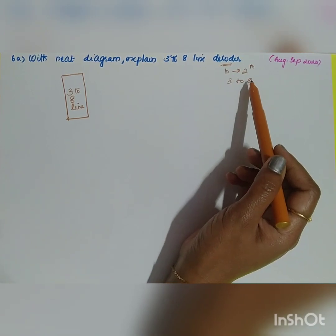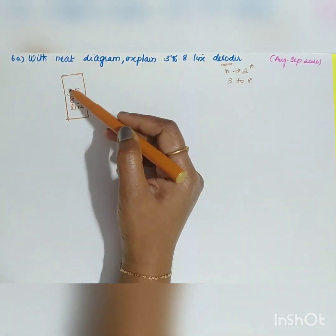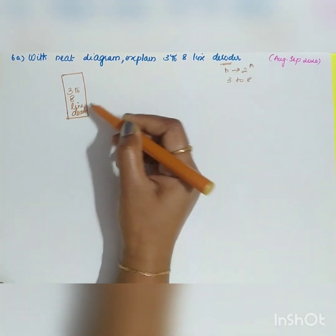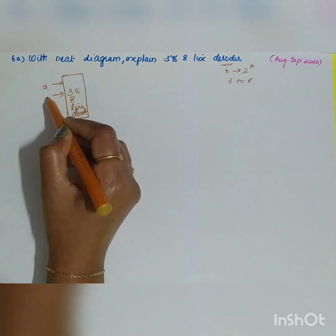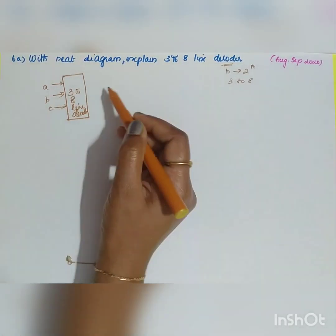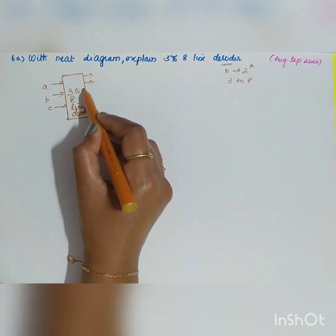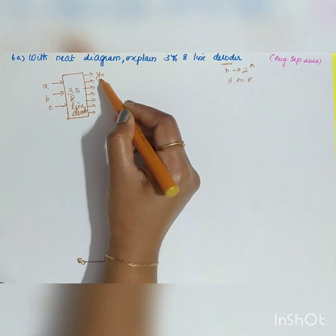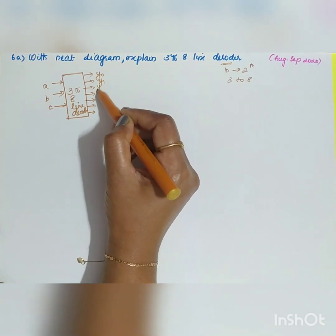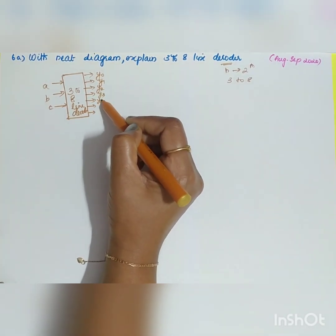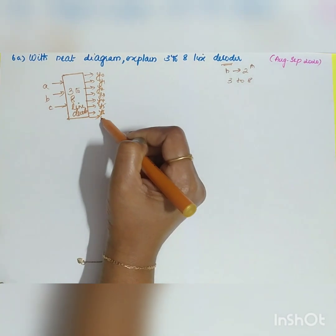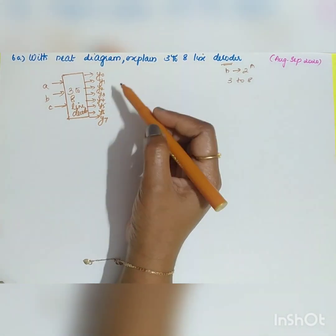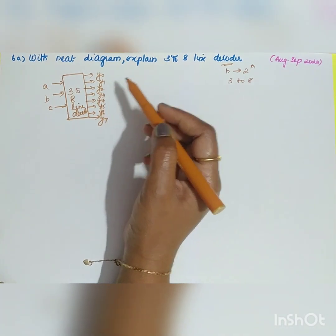Let us draw the diagram of a 3-to-8 line decoder. The decoder has three inputs: A, B, and C, and it converts them into outputs 0 to 7. The outputs are Y0, Y1, Y2, Y3, Y4, Y5, Y6, and Y7 — one code converted to another, two forms.